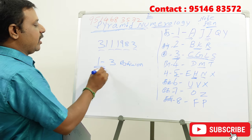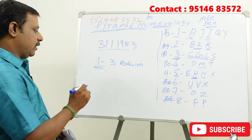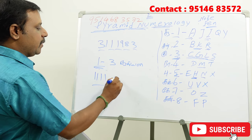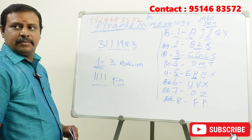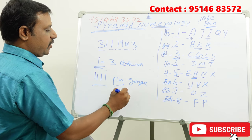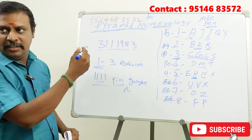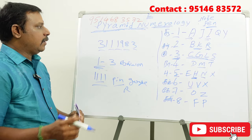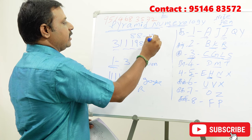This is your assistant number. Here, 1, 1, 1, 1. You can find a pin number. You can find a Google pin number, or a phone pay number. You can find a pin number.